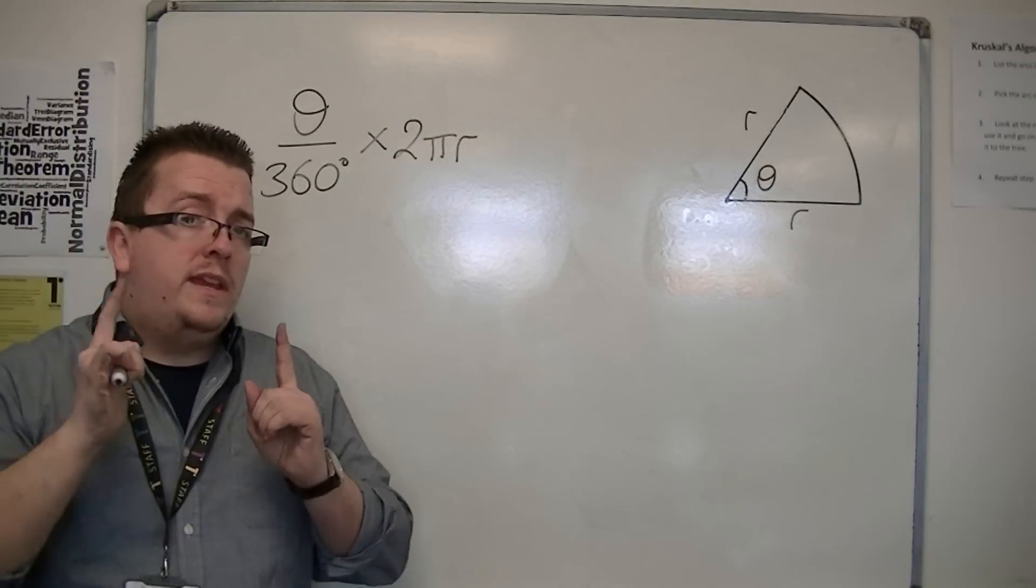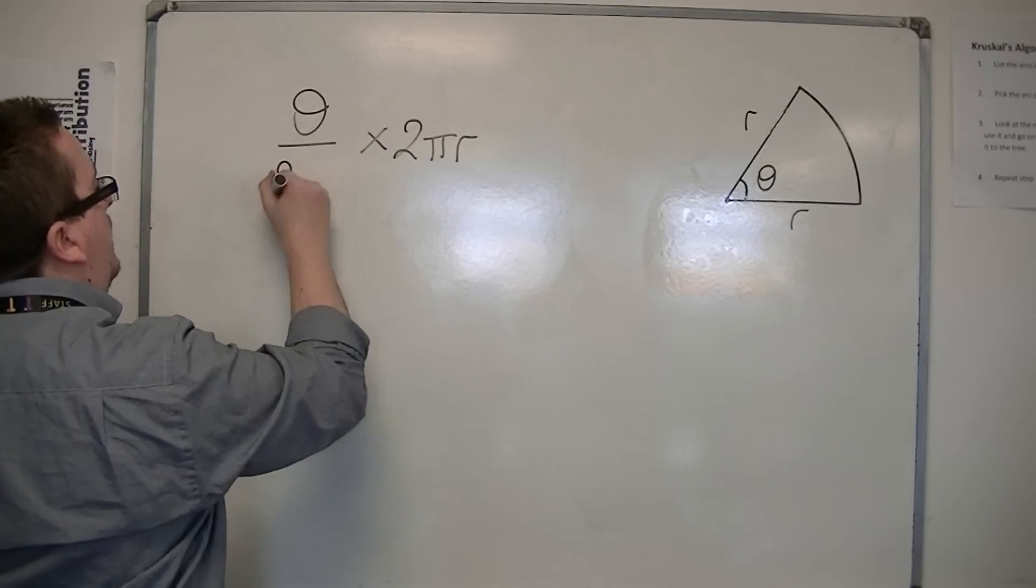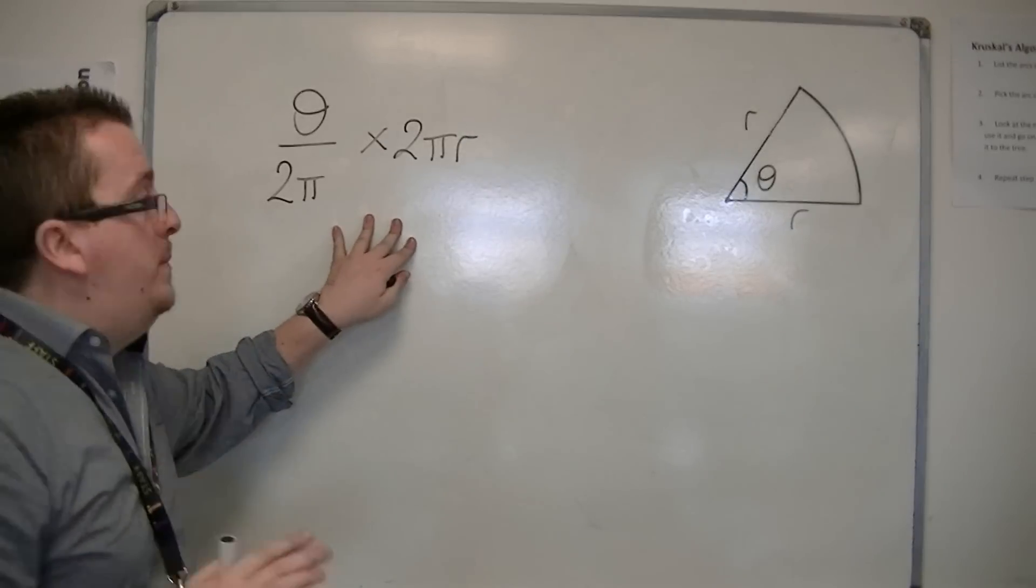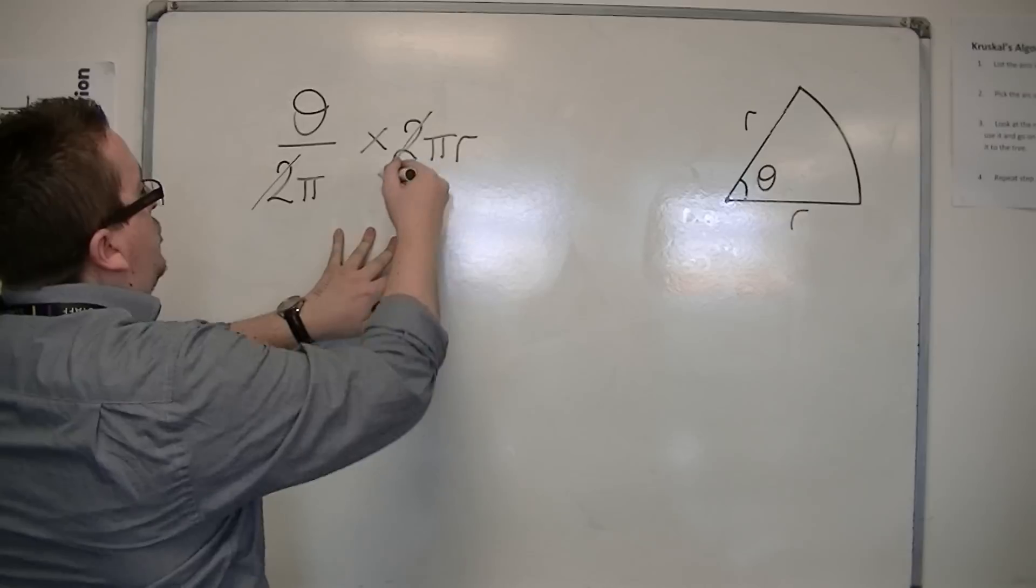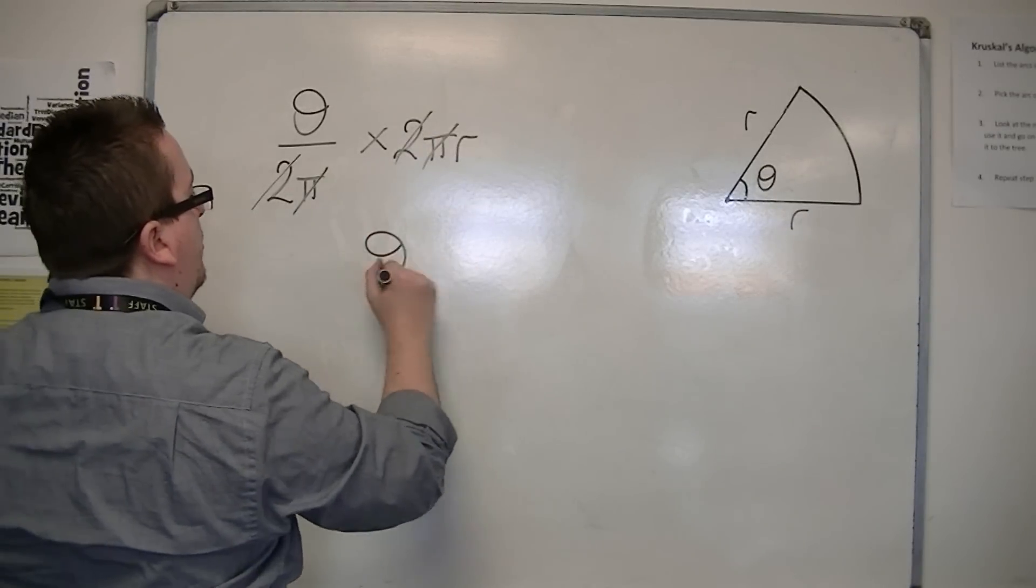Now, if I'm working in radians, then I replace the 360 with 2 pi. But what's going to happen is that with this formula we're going to have the 2's cancel each other out, and the pi's. And you're just left with theta r.